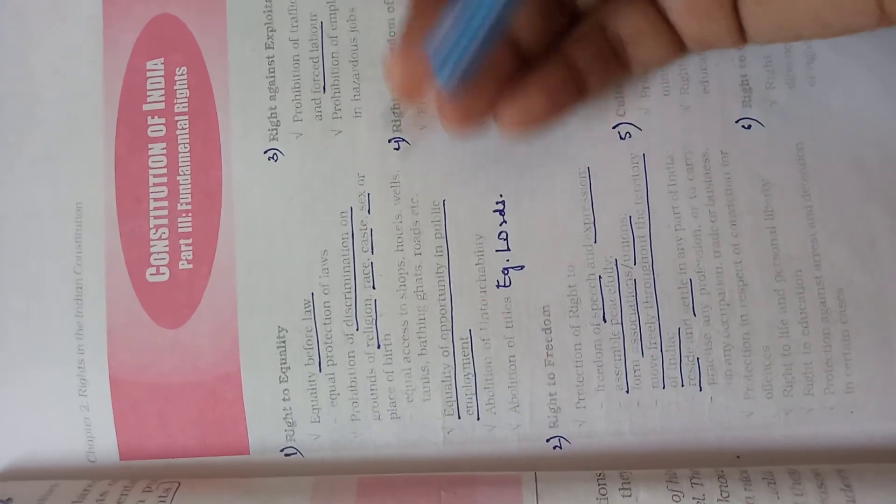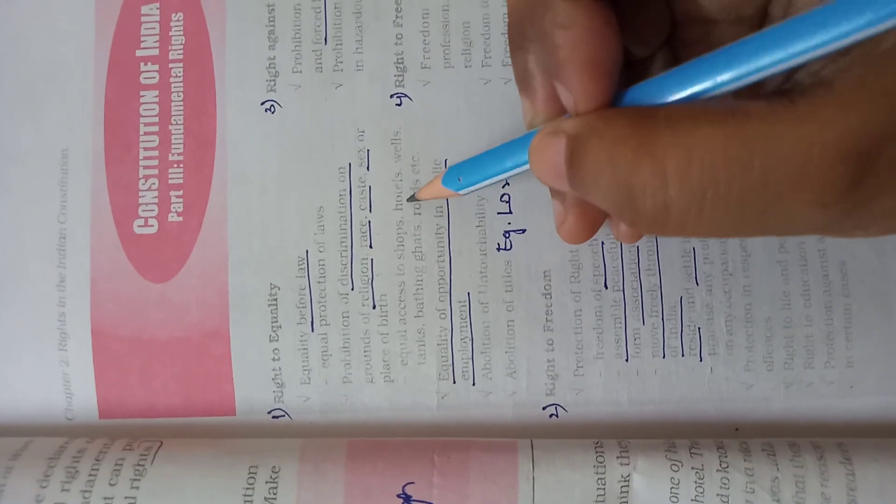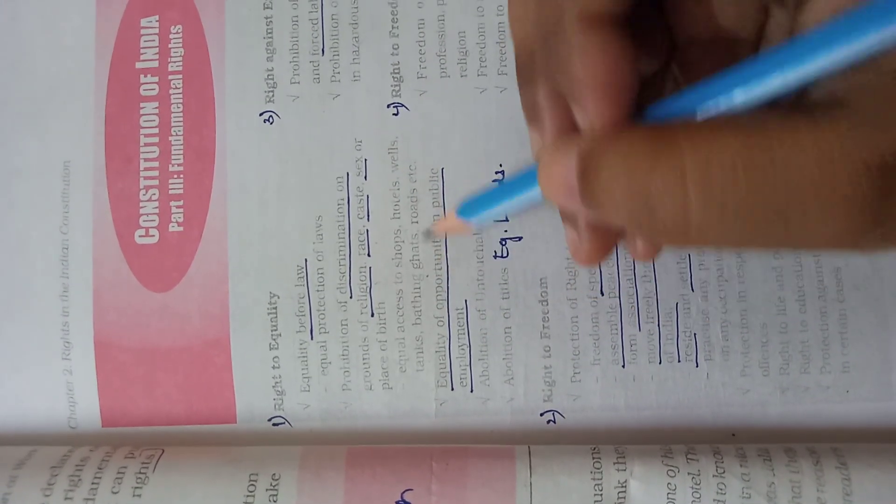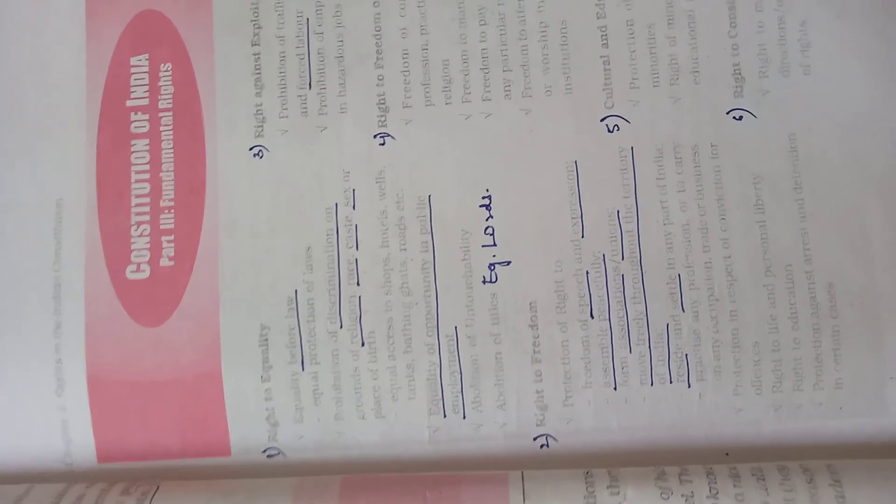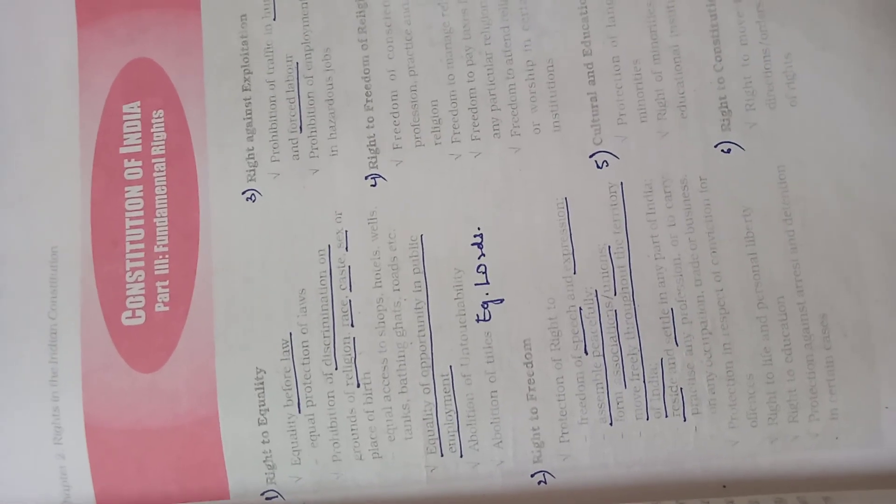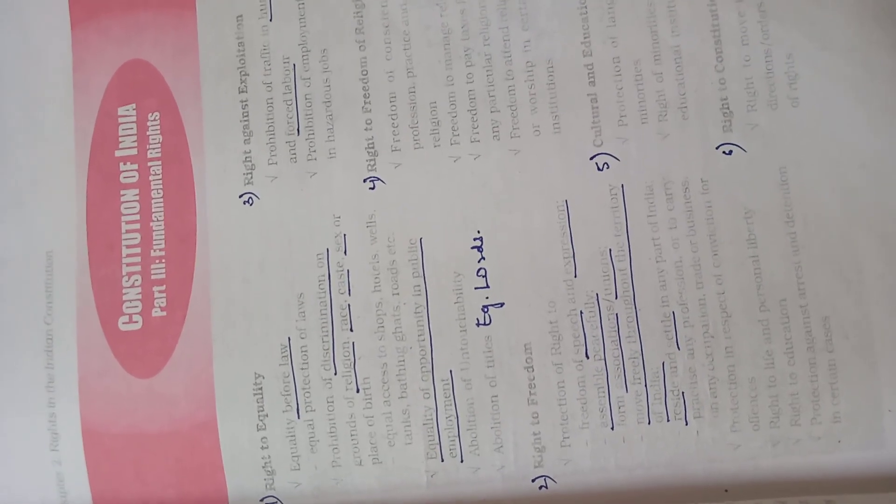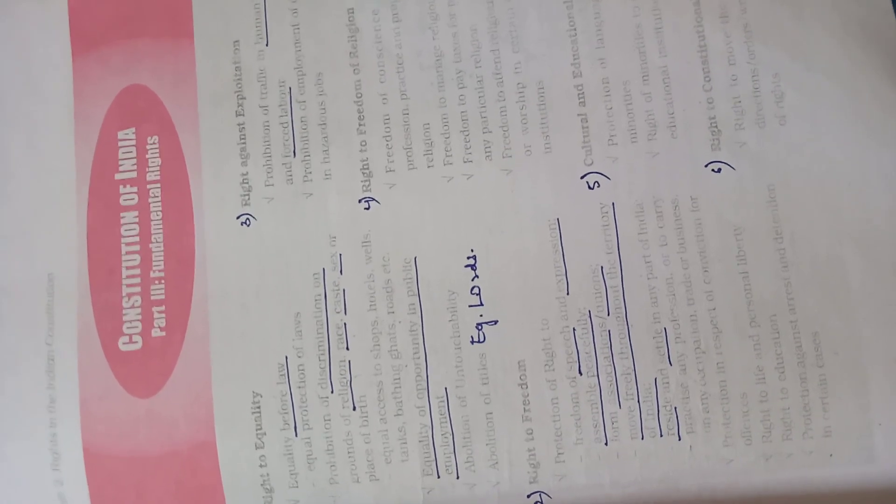Equal access to shops, hotels, wells, tanks, bathing, roads, etc. You must be aware that in ancient times, lower castes were not allowed to fetch water. They were not allowed to go to wells. Water access was not allowed for them.